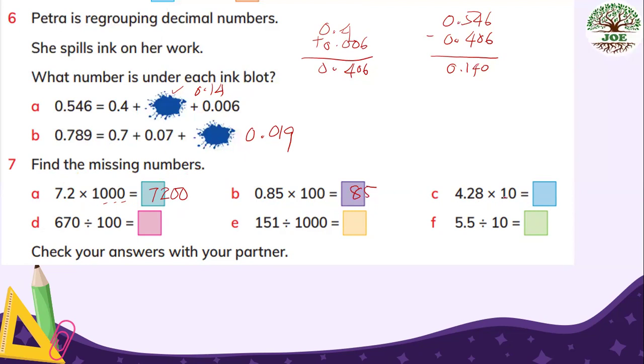4.28 times 10. 1 place larger. 4.28 times 10. 42.8. 670 divided by 100. 2 places smaller. So this 6 becomes. 600 becomes 6 ones. So 6.7. 151 divided by 1,000. 3 places smaller. So 0.151. 5.5 divided by 10. 1 place smaller. So 0.555. Check your answers with your partner.